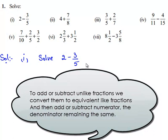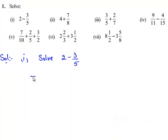For addition or subtraction of fractions, we need to obtain a common denominator. To solve 2 minus 3 by 5, we write this as 2 by 1 minus 3 by 5.